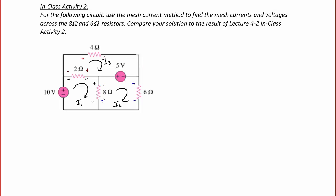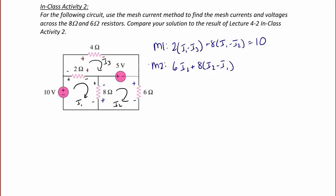Now we are ready to write our three KVL equations. For mesh I1, we're going to have 2 times (I1 minus I3) plus 8 times (I1 minus I2), and that equals our voltage rise which is 10. For mesh 2, we're going to have 6I2 plus 8 times (I2 minus I1) plus 5, so plus 5 would equal negative 5 on the right side of the equal sign. Mesh 3, starting with the 2 ohm resistor, we're going to have 2 times (I3 minus I1) plus 4 times I3 equals 5.